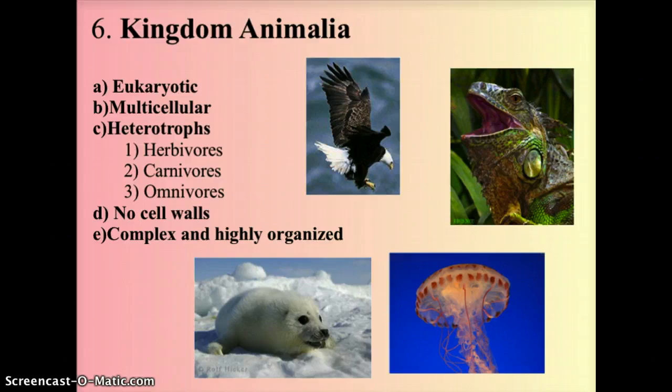So this has been a basic explanation of our taxonomic system and the six major kingdoms in our biological classification system.